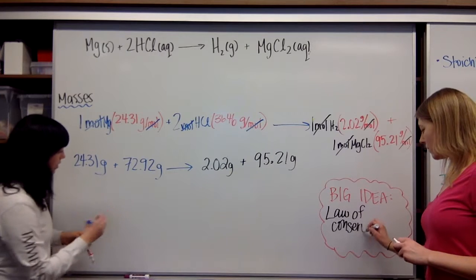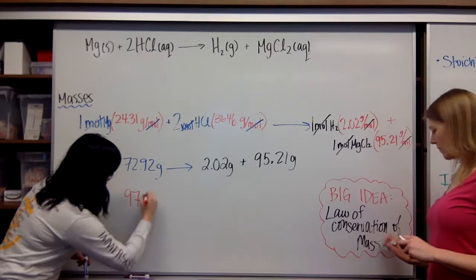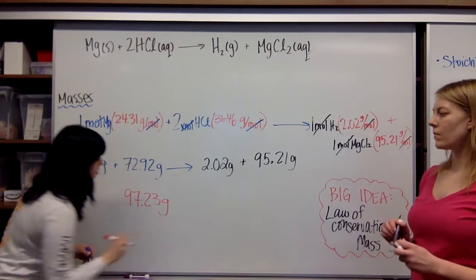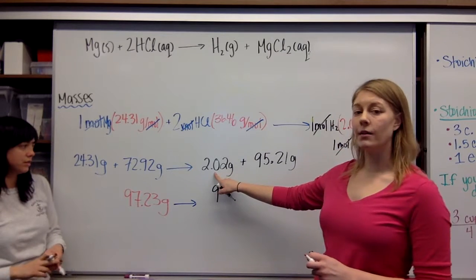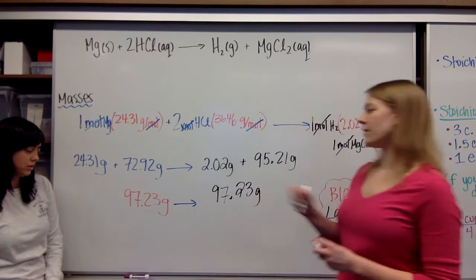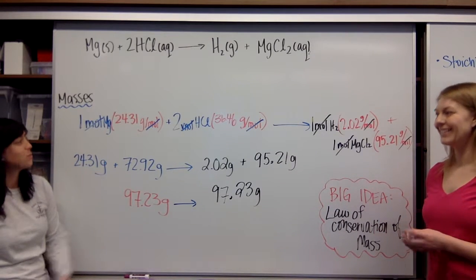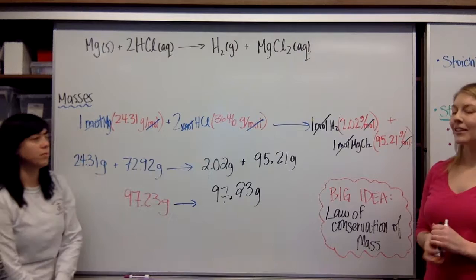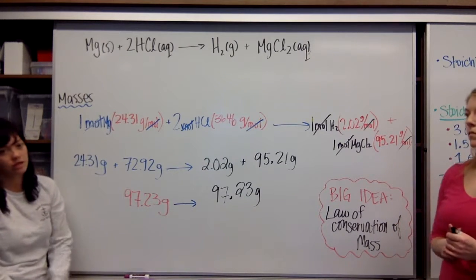So, our end result is going to be 97.23 grams yields, also, over here, 95.21 plus 2.02 is 97.23 grams. If those don't equal each other, you've done something wrong. Perhaps you forgot to go ahead and multiply through. That's usually the error that we have or we didn't balance correctly in the first place.